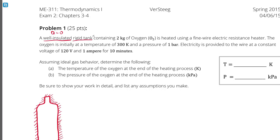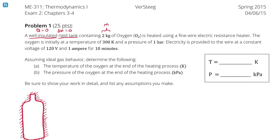Rigid tank means the volume of my tank is not going to be changing. Even if we add heat to it and the pressure increases, that doesn't change the volume — it is rigid. Next I'm told I have two kilograms of oxygen. This is the mass at the beginning of the process, and since no mass entering or exiting is mentioned, I'm assuming mass is constant — this is a closed system. Mass 1 and mass 2 are both just m, two kilograms.